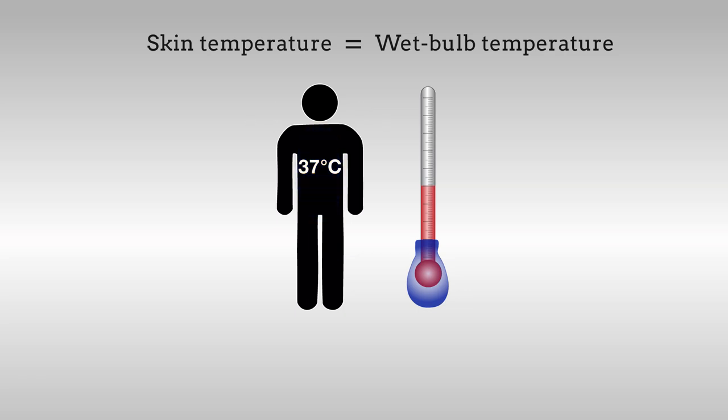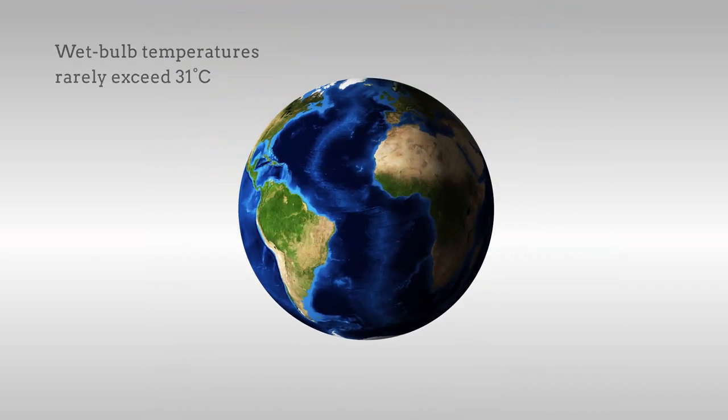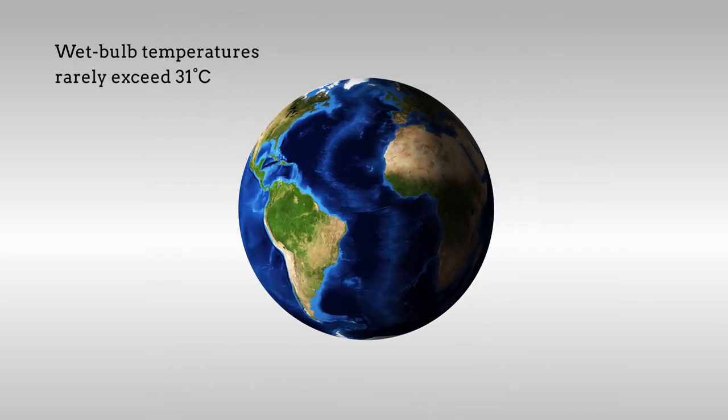Exposure to wet bulb temperatures above 35 degrees Celsius for more than six hours is enough to cause even the fittest human body to overheat and begin to fail. Around the globe, wet bulb temperatures rarely exceed 31 degrees Celsius.